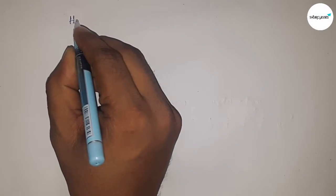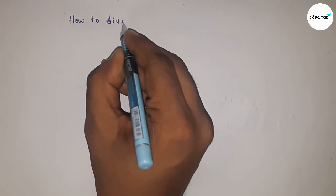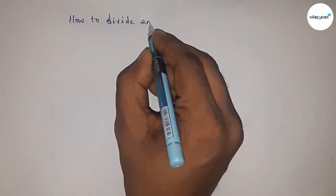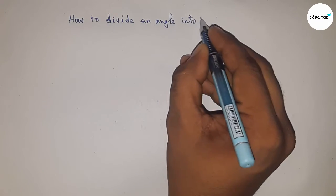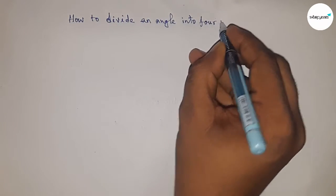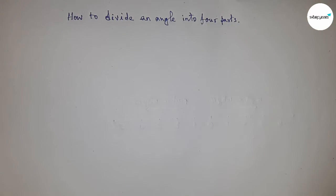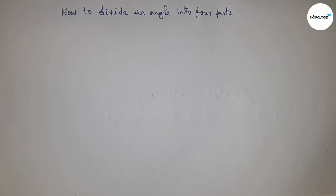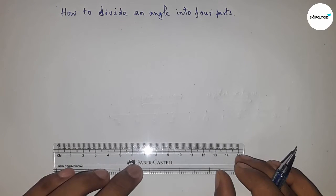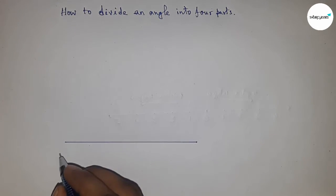Hi everyone, welcome to assessor classes. Today we are talking about how to divide an angle into four equal parts. Before starting the video, please subscribe to the channel and press the bell icon. First of all, draw a line of any length.